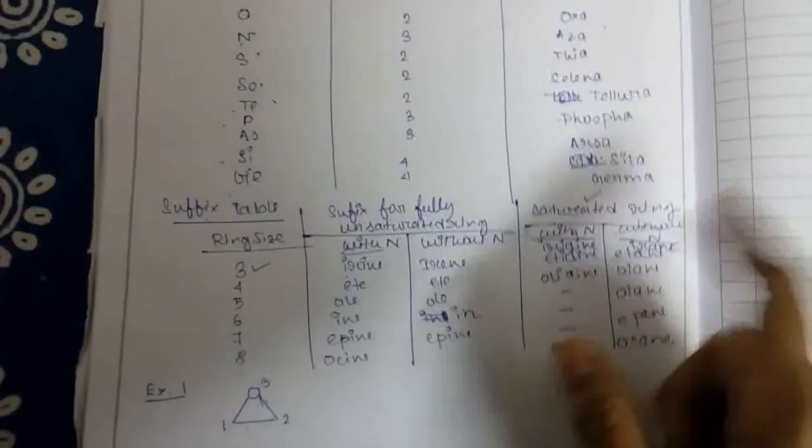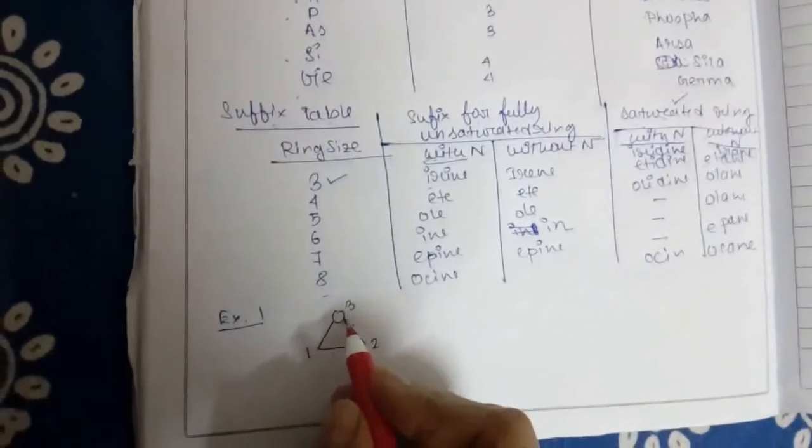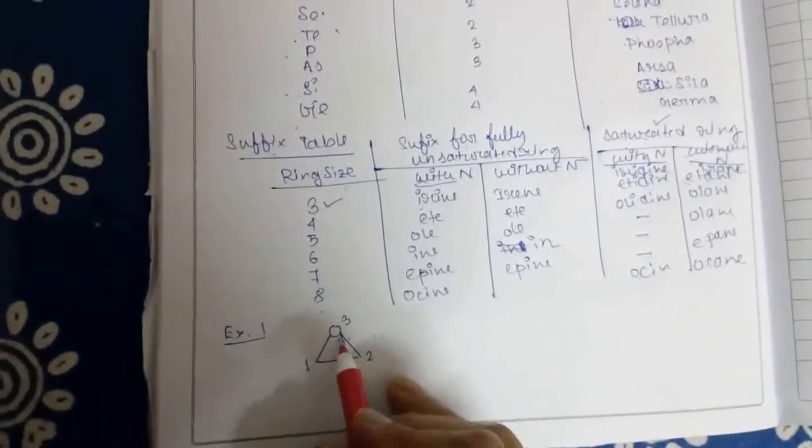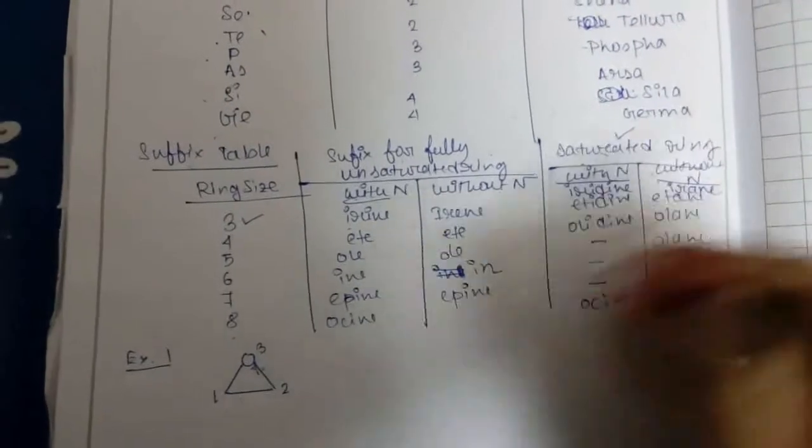Here's an example. This has a hetero atom oxygen, so it will be 'oxa.' The 'a' of oxa will be omitted. The ring size is 3, it is without nitrogen, and it is saturated. So without nitrogen, saturated, that is '-irane.' Its name will be oxirane.